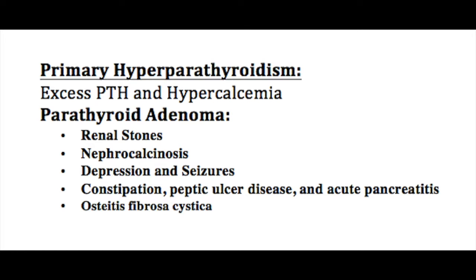Primary hyperparathyroidism is where you have excess parathyroid hormone due to a disorder of the parathyroid gland itself. You can get primary hyperparathyroidism in three ways: an adenoma, which is a tumor that produces too much parathyroid hormone; sporadic hyperplasia, where the cells hyperplase for an unknown reason; or carcinoma — a parathyroid carcinoma that produces too much PTH. However, the most common cause is parathyroid adenoma.